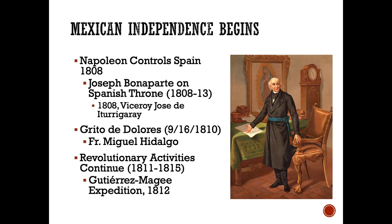We have to look at the Mexican independence movement first. Napoleon was in control of Spain by 1808. Joseph Bonaparte, Napoleon's brother, was on the Spanish throne for a few years. And in Mexico itself, the viceroy, José de Iturrigaray, was in control of what is now Mexico.